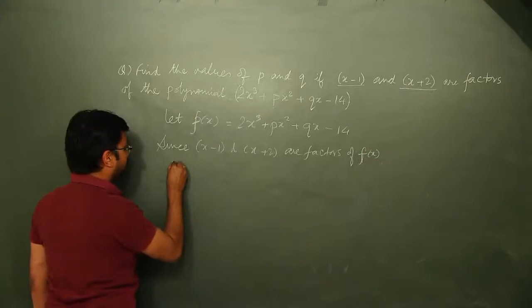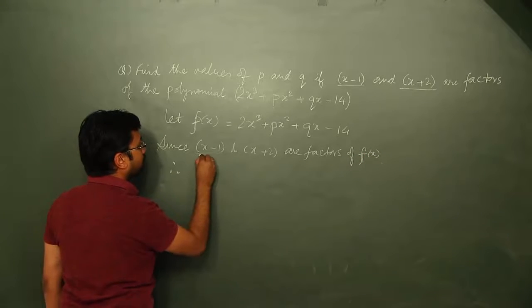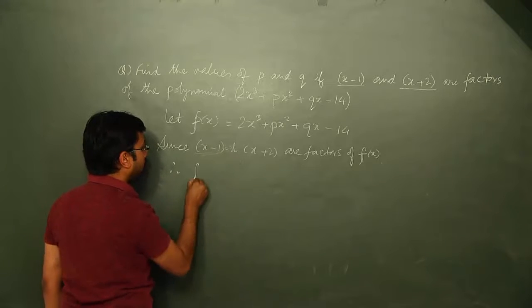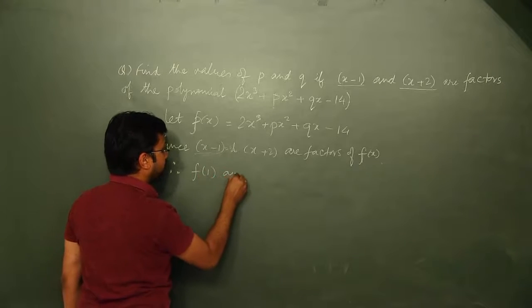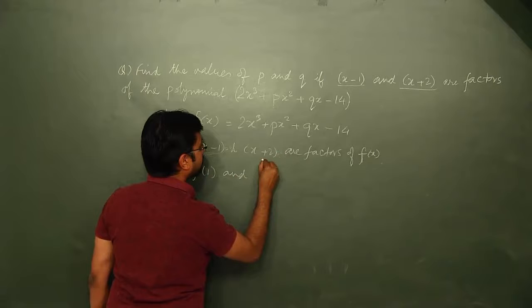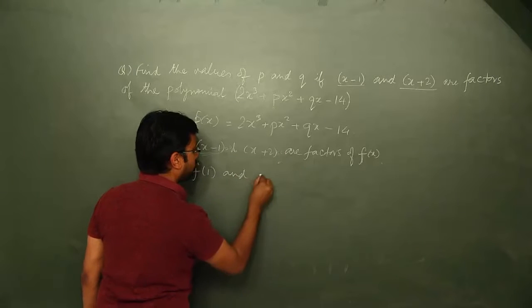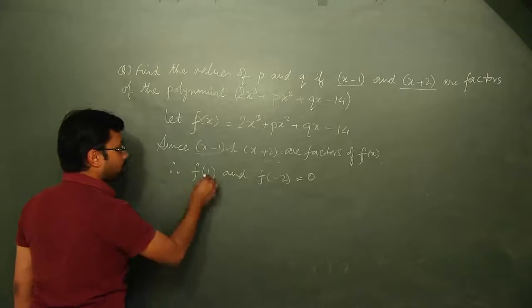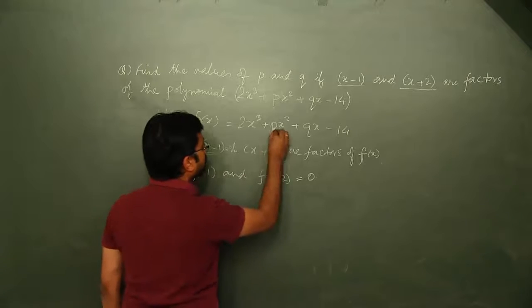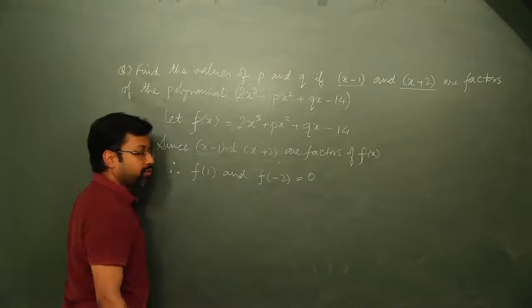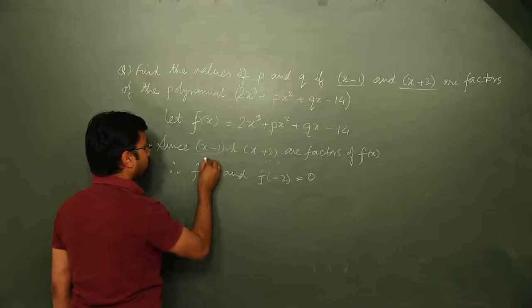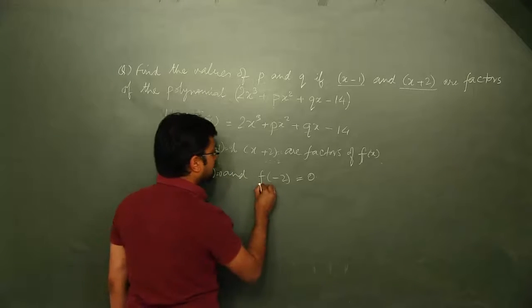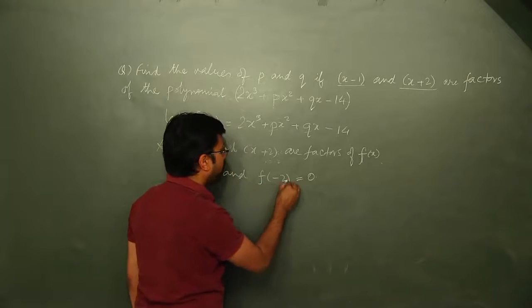Therefore, what do you get when you substitute this to 0? x equals 1, so f(1), and x equals minus 2, so f(minus 2) will be equal to 0. Since there are two unknowns, p and q, we need two equations. One equation can be obtained by equating f(1) to 0 and the second by equating f(minus 2) to 0.